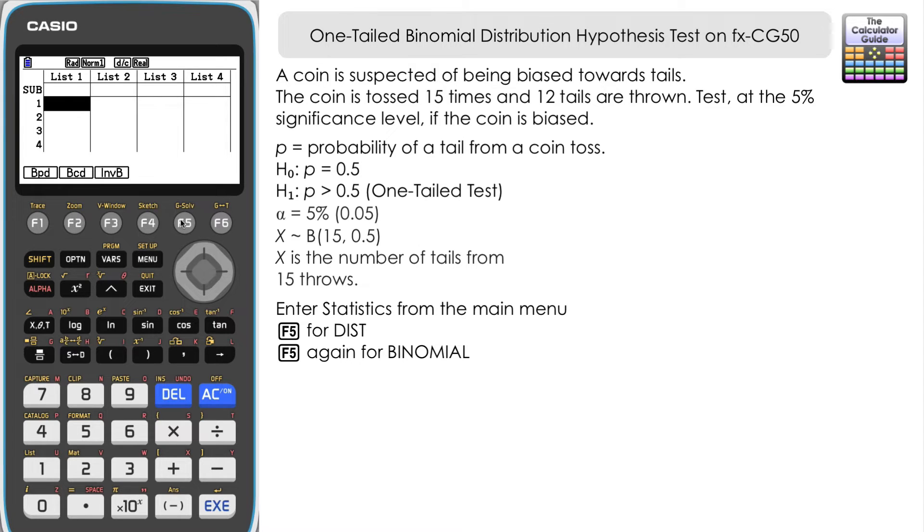We've got three possible choices: binomial probability distribution, binomial cumulative distribution, and inverse binomial. The coin is tossed 15 times and 12 tails are thrown. So 12 is the X value we'll input. But we've got to consider the possibility of more extreme results than 12—we could have got 13, 14, or 15 tails. We need to think about the accumulation of those results, so it's the cumulative distribution we're using. Press F2.